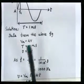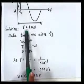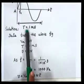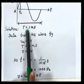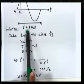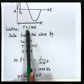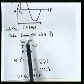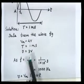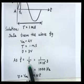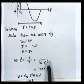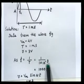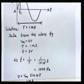Since the time period is given, you can find frequency using the relationship f = 1/T. So f = 1/(1 × 10⁻³) = 1000 Hz.